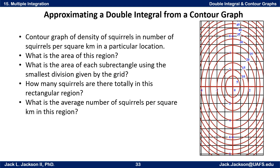This is also going to be a contextual example — made-up data of course, but still a contextual example. Let this contour graph represent the density of squirrels, specifically the number of squirrels per square kilometer in a particular location. We have a region that goes from negative 4 to 4 on x and from negative 8 to 8 on y.